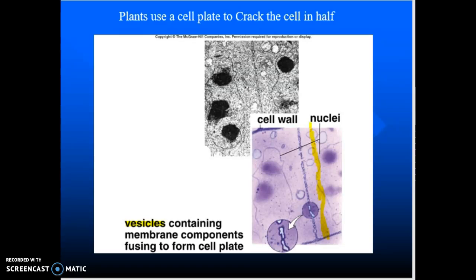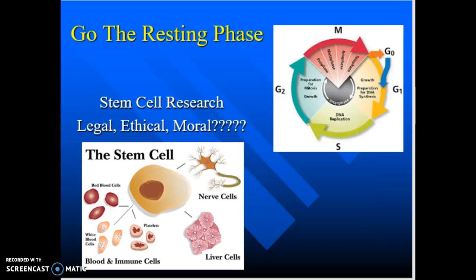Keep in mind that after about 50 divisions, the original cell tends to die off and deteriorate. One phase we didn't mention is G0. G0 is a resting phase. After mitosis is over, after telophase is complete, some cells jump into G0 and they rest — they stop, they pause. Then they might come back and grow, replicate their DNA, go through the cycle again. But G0 is a resting phase.